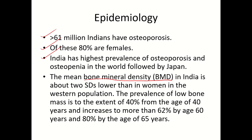As age advances, the prevalence of osteoporosis increases and bone mineral density decreases. At the age of 40, low bone mineral density is lower by approximately 40% compared to normal. As age progresses to 60, it is further reduced to 62%. That means the bone is becoming more and more weak as age progresses.